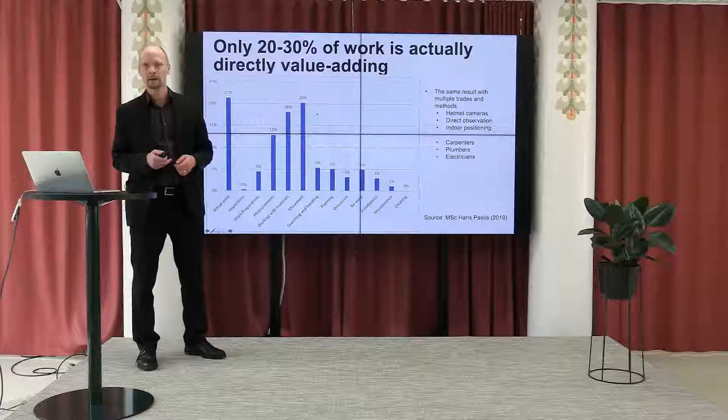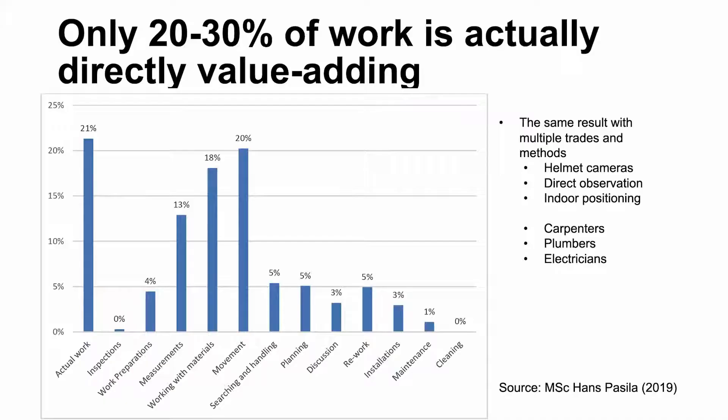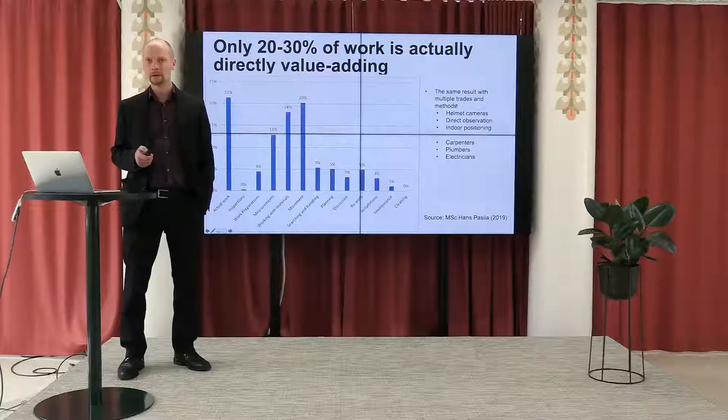We have achieved the same result with multiple trades using different methods — direct observation, helmet cameras, indoor positioning systems — evaluating carpenters, plumbers, and electricians. They all show similar results. In some projects this may be 30 or even 35 percent, but at maximum we have measured 30 to 35 percent value-adding time in construction. It means that 70 percent of the time is wasted and we are not getting the full capacity of our workers.